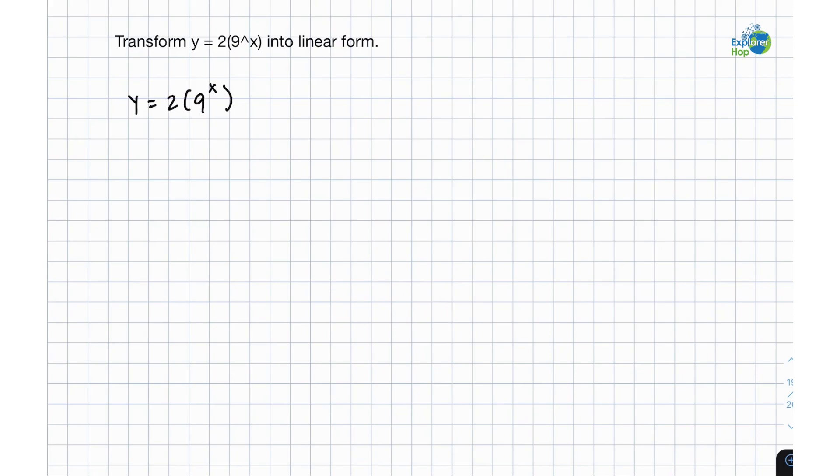The first step in doing this is to take the log of both sides. So that will give us log y equals log of 2 times 9 to the x.